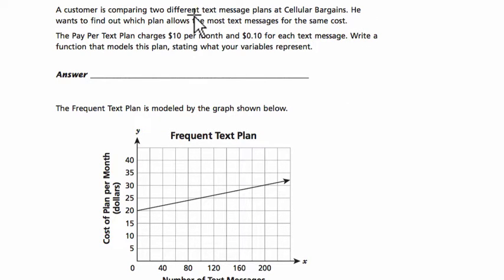Okay, it says that a customer is comparing two different text message plans at cellular bargains. He wants to find out which plan allows the most text messages for the same cost. Makes sense, right? We want to get the most text messages for the least amount of money possible.